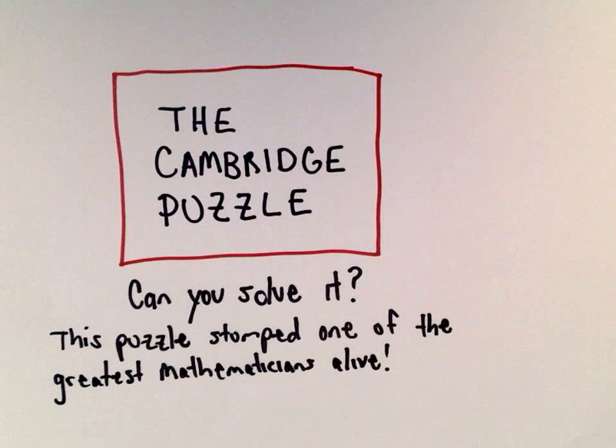It actually came from a mathematical Olympiad and eventually they took it back to Cambridge. And one of the greatest mathematicians alive actually couldn't solve it. You can make a case that he's actually one of the greatest mathematicians ever, a guy by the name of John Conway.